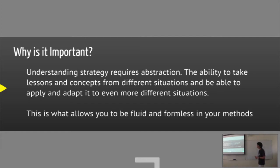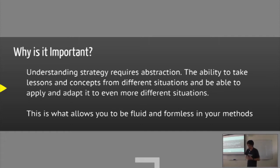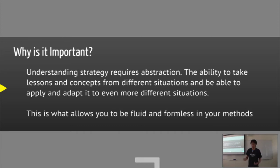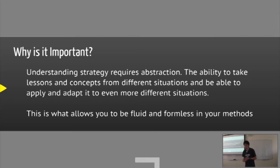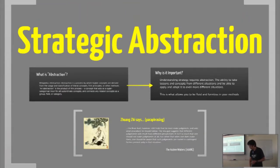Abstraction is a product of this process — a concept that acts as a super-category for subordinate concepts and connects related concepts as a group, field, or category. Understanding strategy requires abstraction: the ability to take lessons from different situations and apply them elsewhere. If you don't abstract, you become rigid in your methods and susceptible to dynamic weakness — any rigid strategy always has a weakness.